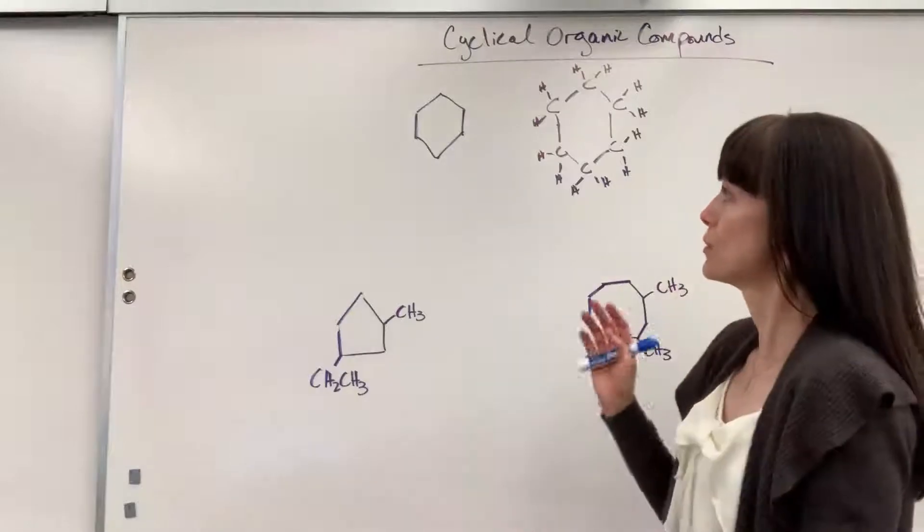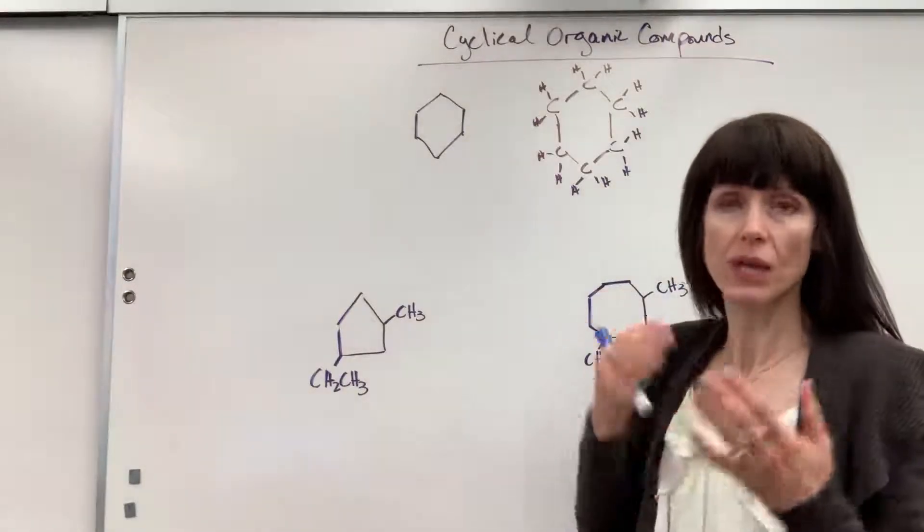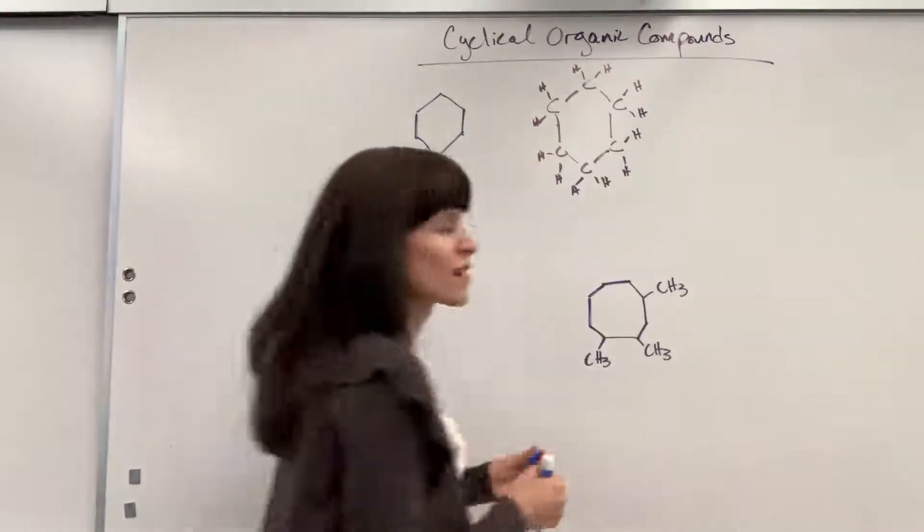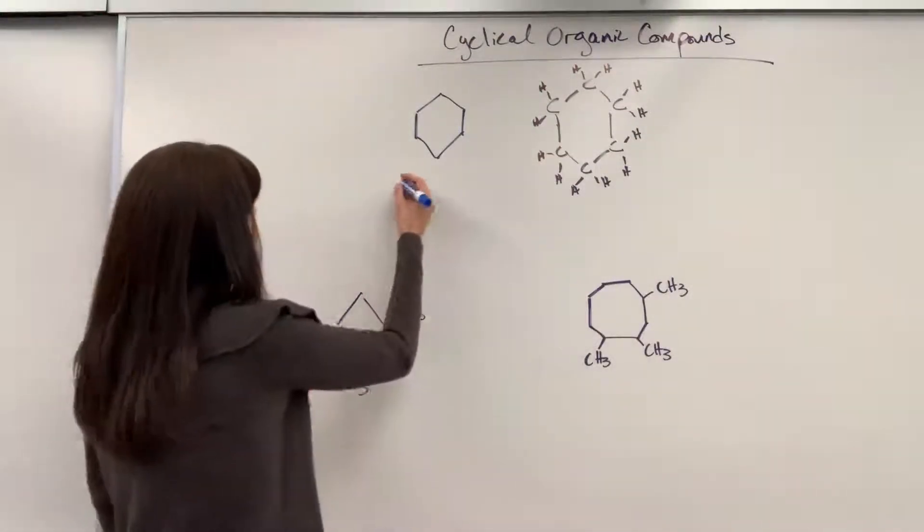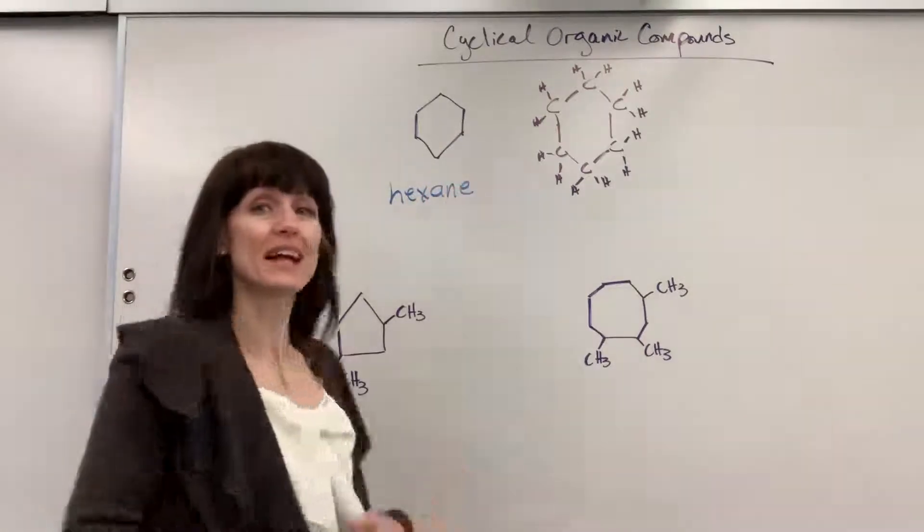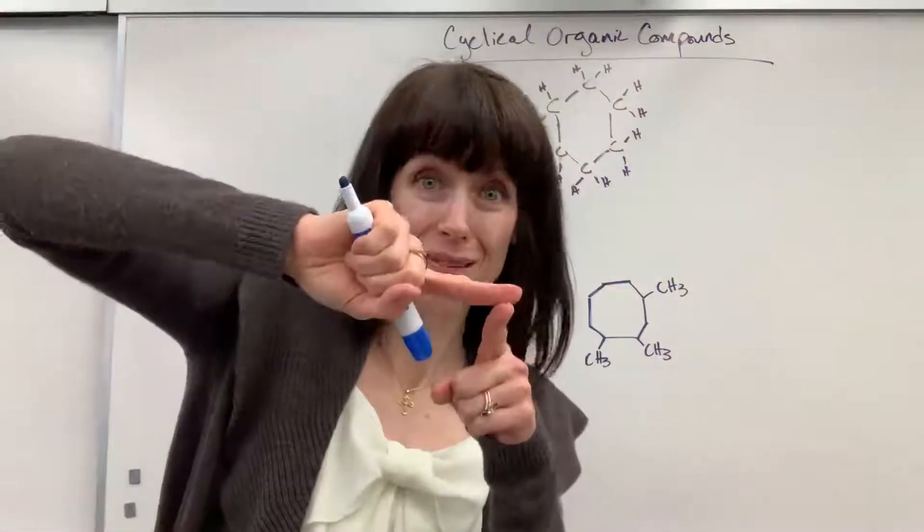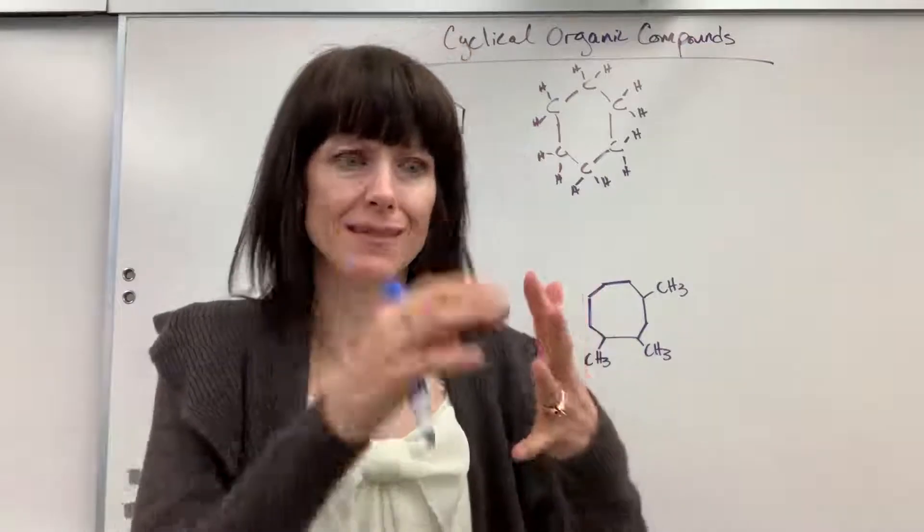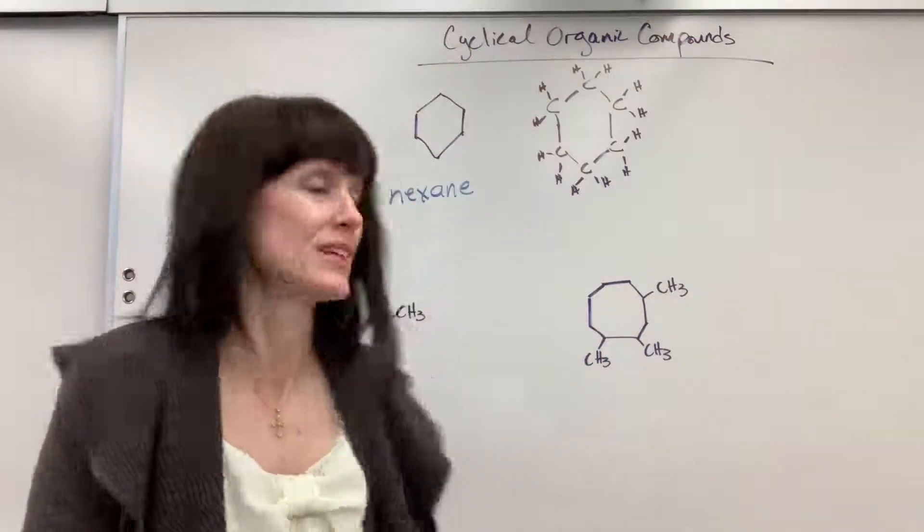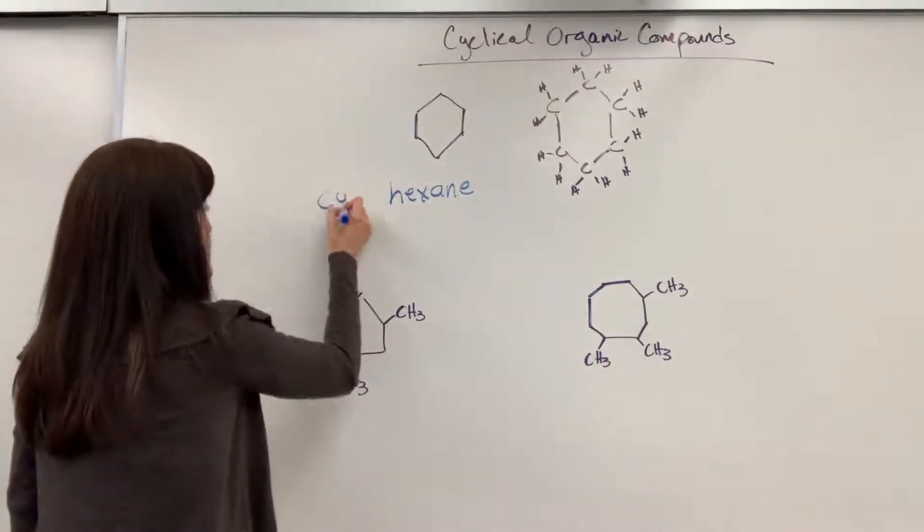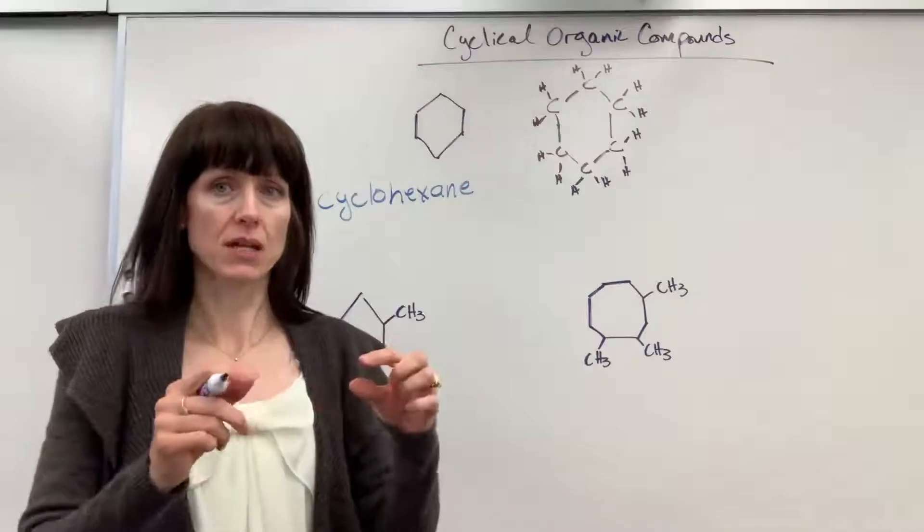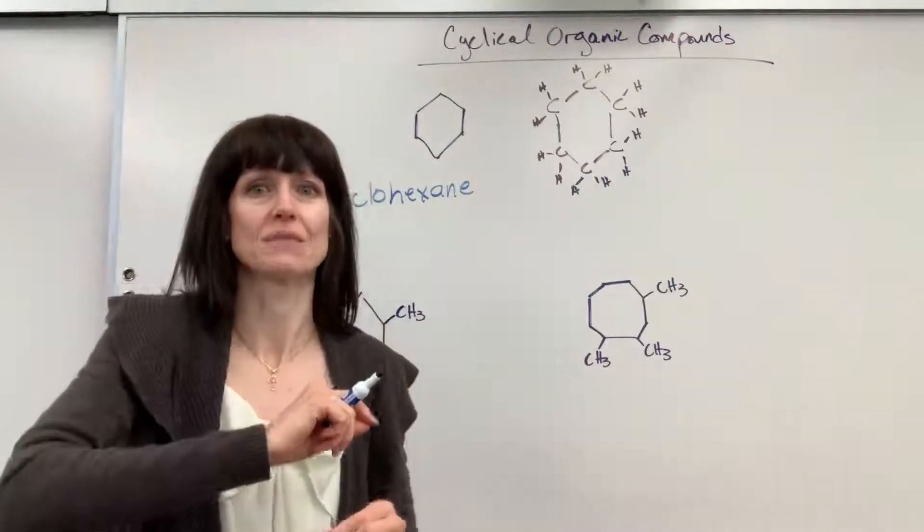Now the way to name this, you count those carbons, look at the bonds. So I've got six carbons, that's hex, they're all single bonds, so that's ane. But then I have to tell the reader this wrapped around and attached to itself. It's in a cyclical pattern. All you do is add the word cyclo to this. That is simply cyclohexane, six carbons that attach to themselves.